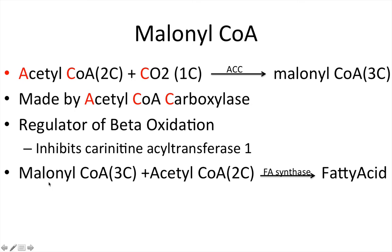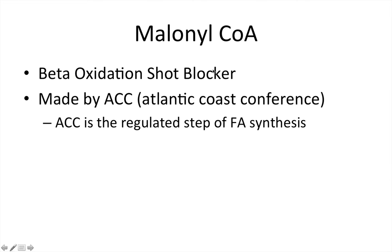Here we've got the reaction we're going to use to make a fatty acid. Once we've got malonyl-CoA, we take it and add acetyl-CoA to it, which is two carbons. This uses the enzyme fatty acid synthase. In this reaction, you're going to take one malonyl-CoA plus many acetyl-CoAs until you reach your desired length of your fatty acid chain.